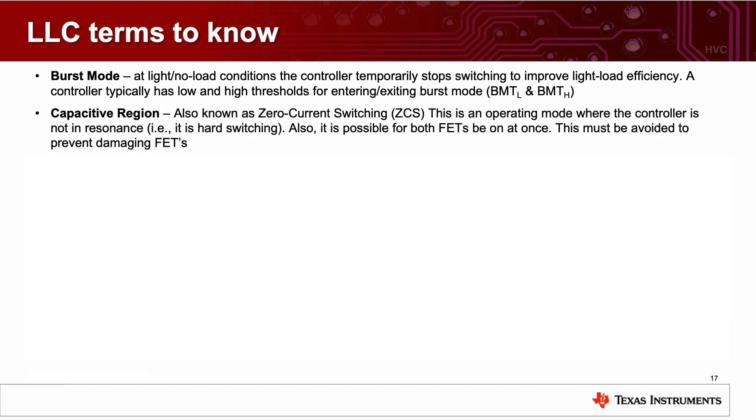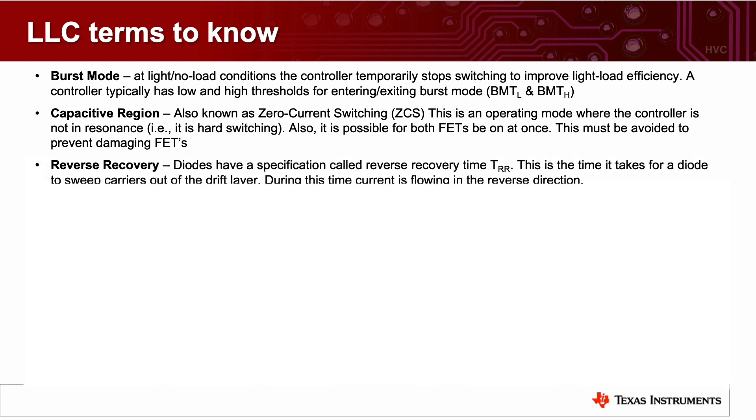The capacitive region is also known as zero-current switching. This is an operating mode where the controller is not in resonance, meaning it is hard switching. In this mode, it is possible for the FETs to both be on at one time. This must be avoided to prevent damaging FETs. When operating in the capacitive region, current is flowing reverse through the parasitic diode of the FET. This can lead to reverse recovery issues because the diode has reverse recovery time. So if the high side FET turns on, both FETs could be conducting at the same time, which will damage the FETs.